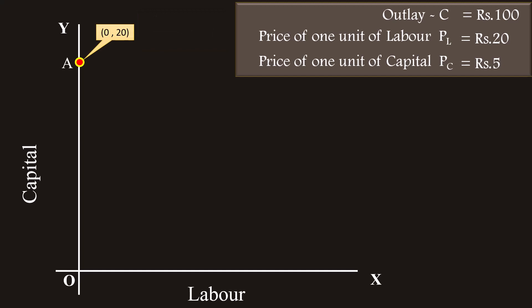These two points A and B are joined with the help of a straight line. The resultant curve is the isocost line or curve.